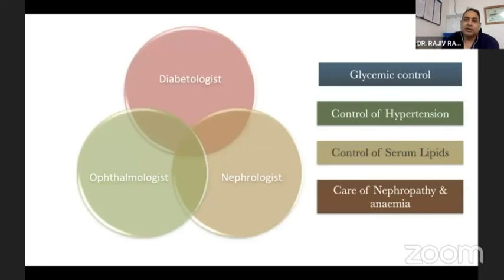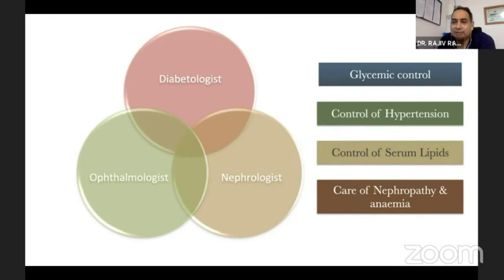Just to conclude, it's not only an ophthalmologist, but a diabetologist, nephrologist — all working together — taking care of glycemic control, hypertension, lipids, nephropathy, and anemia. These are all very crucial for successful management of DME. Thank you very much.